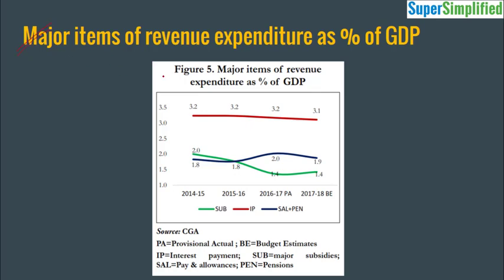Looking at major items of revenue expenditure as a percentage of GDP: the green line shows subsidies coming down — government is rationalizing subsidies, a very good sign. The blue line shows salaries and pensions increasing because of 7th Pay Commission recommendations, now at about 2% of GDP. The red line shows interest payment liabilities of the center are actually coming down, which is again a good sign.